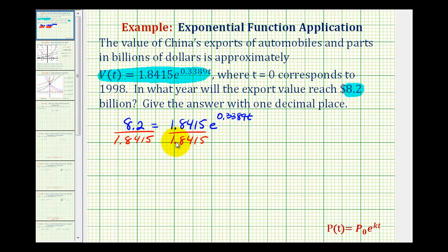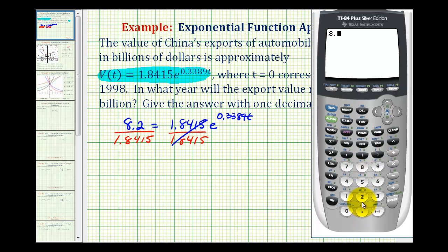Notice on the right side, this quotient here is equal to one. Let's go and determine this quotient here on the calculator. We'll go ahead and round this. Let's say it's approximately 4.4529.